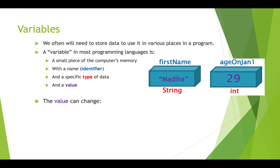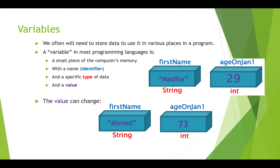We can change the value of variables. In this case we've changed what's in the 'firstName' box to 'Ahmed', and the 'ageOnJan1' box now has 73 in it. But the names of these boxes and the type of value they can hold doesn't change — if we wanted a different name we'd have to get rid of this box entirely and create a new one.